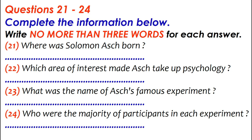Now listen carefully and answer questions 21 to 24. In this lecture, I want to introduce you to the life and work of a famous psychologist who had a big influence on the field of social psychology. Social psychology deals with group behaviour and the individual as a member of a group, and Solomon Asch made a most important contribution. Solomon Asch worked mostly in the USA, but he was born in 1907 in Poland, and he came to the US when he was 13.